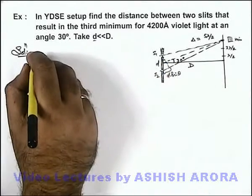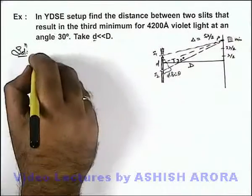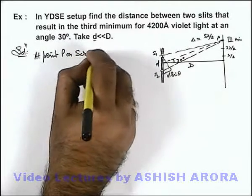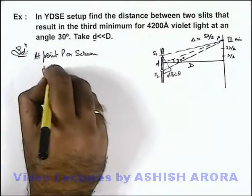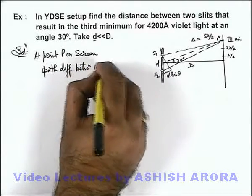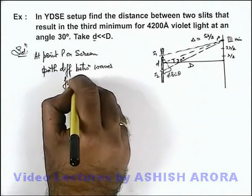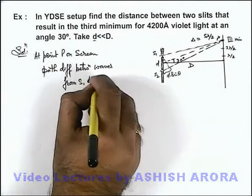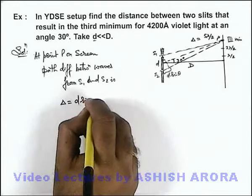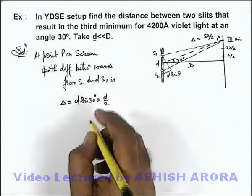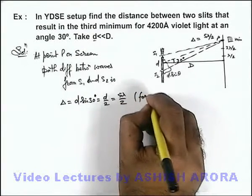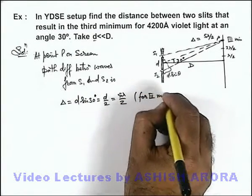So here we can write: at point P on the screen, the path difference between waves from S1 and S2 is d·sin(30°), which equals d/2. And this should be equal to 5λ/2, for the 3rd minimum occurring at point P.